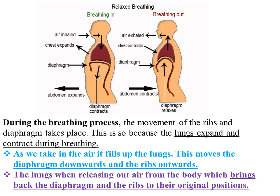During inhalation, the diaphragm moves downward and the ribs move outward. During exhalation, the lungs release air out of the body, which brings the diaphragm and the ribs back to their original position. This is the main mechanism that occurs during the breathing process — inhalation and exhalation.